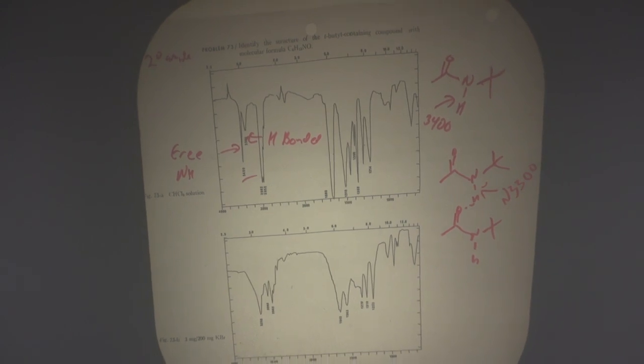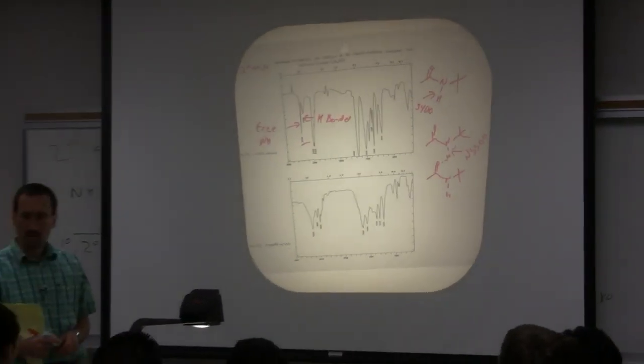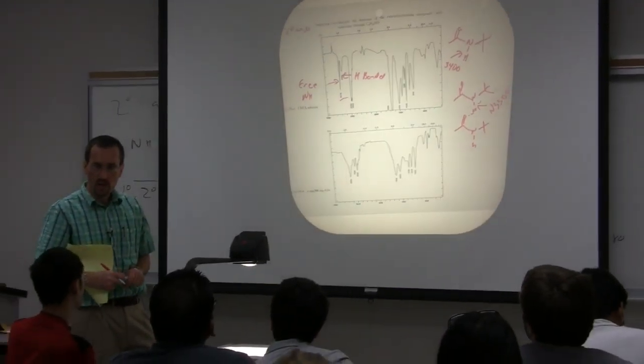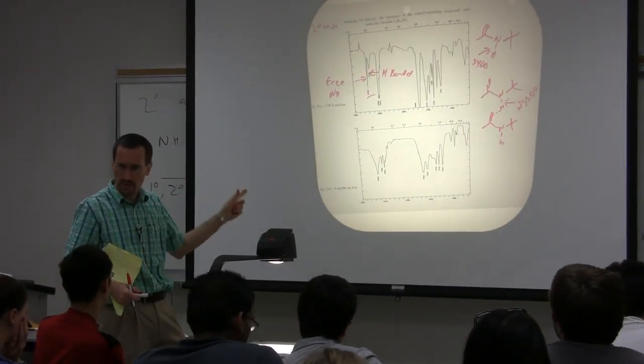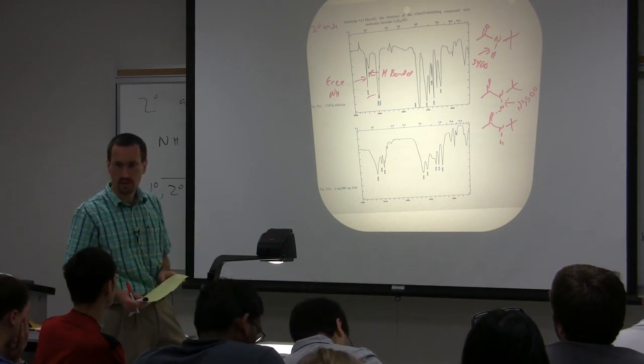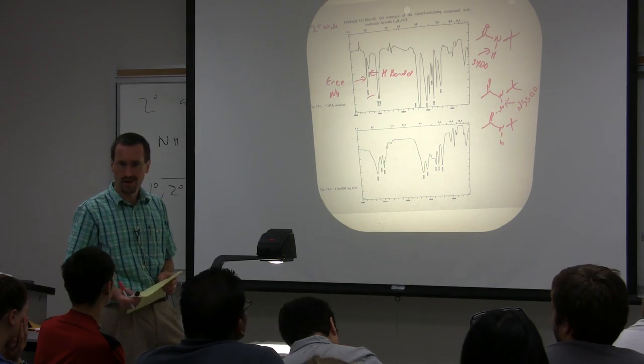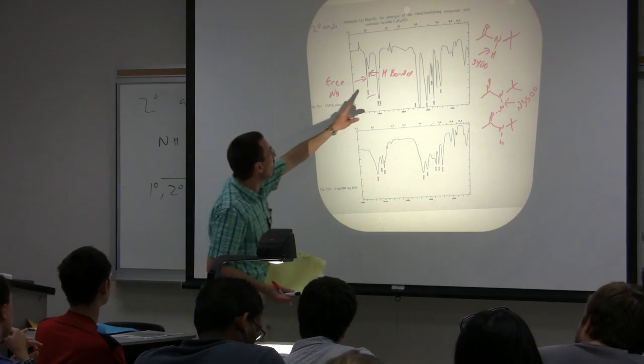If you have a primary amide, will the two peaks for the symmetric and asymmetric be the same size? They're a little bit different in size. Usually the one that's the higher wave numbers is slightly longer in length. So how do you know if you have a primary amide versus a secondary amide that's concentrated? Great question.